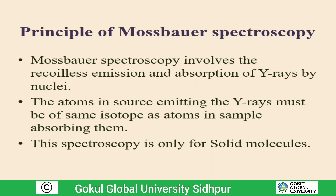The principle of Mössbauer spectroscopy involves the recoilless emission and absorption of gamma rays by nuclei. The atoms in the source emitting gamma rays must be of the same isotope as the atoms in the sample absorbing them. For example, if we want to analyze an iron sample, the source must also be of iron, and the absorber must possess iron as the element.